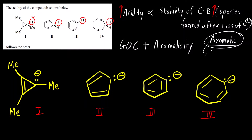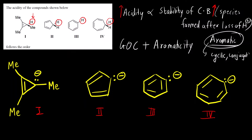What is the condition for a compound to be aromatic? It should be cyclic, it should have conjugation, it should be planar, and it should follow 4n + 2 pi electrons — that is Hückel's rule of aromaticity.